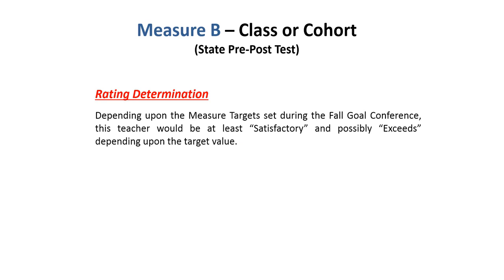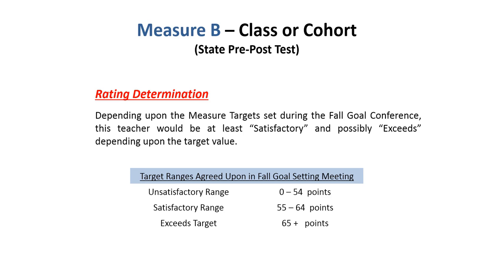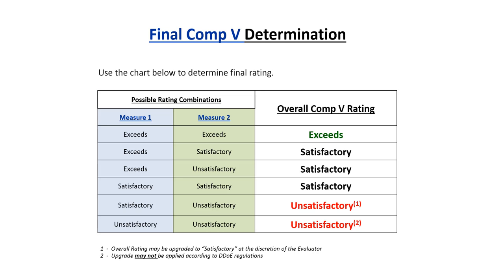The actual rating for this measure depends upon the goals established during the fall goal-setting conference. In this case, the teacher's Measure B score of 63 falls within the 55 to 64, or 'satisfactory,' range — just narrowly missing an 'exceeds' rating. Most, if not all, educators and specialists' final Component 5 ratings are based on two measures, each weighted at 50%.